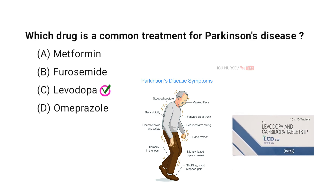Levodopa is the most common treatment for Parkinson's disease. It turns into dopamine in the brain, helping address the lack of dopamine, which reduces symptoms like tremors and stiffness.